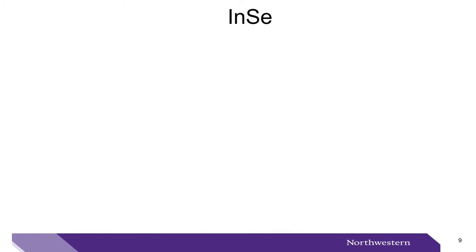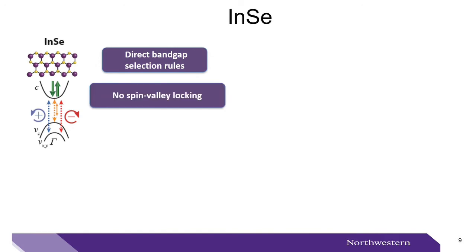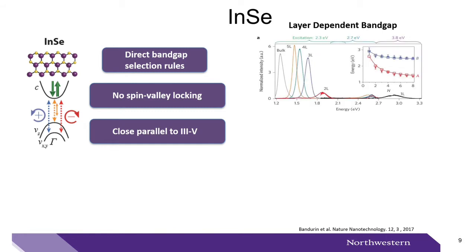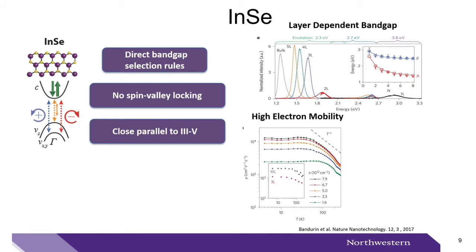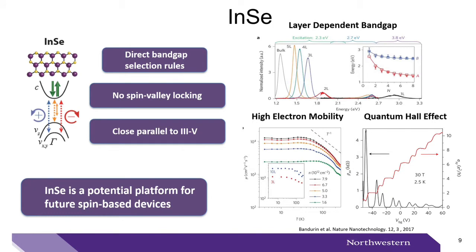Indium selenide is a layered material that has been predicted to have spin-polarized optical selection rules near the gamma point. This means that it has direct band gap selection rules and no spin-valley locking, therefore a closer parallel to 3-5 semiconductors. On top of this, indium selenide has been experimentally demonstrated to have a layer-dependent band gap, high electron mobility, and interesting transport properties. When we take these all together, we can see that indium selenide is a potential platform for future spin-based devices.